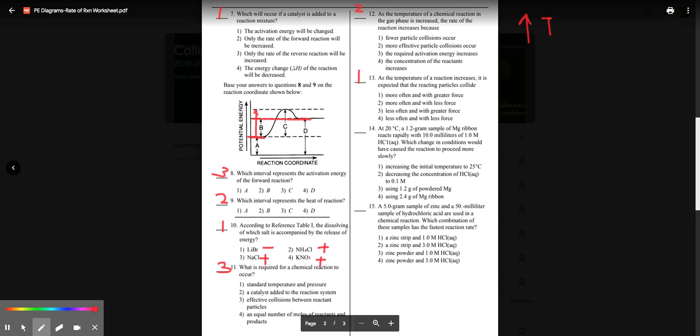At 20 degrees Celsius, a 1.2 gram sample of magnesium ribbon reacts rapidly with 10 milliliters of one molar HCl. Which change in conditions would have caused this to happen more slowly, slow the reaction down? Increase temperature is not going to slow it down. Decreasing the concentration, making it less concentrated, that might.